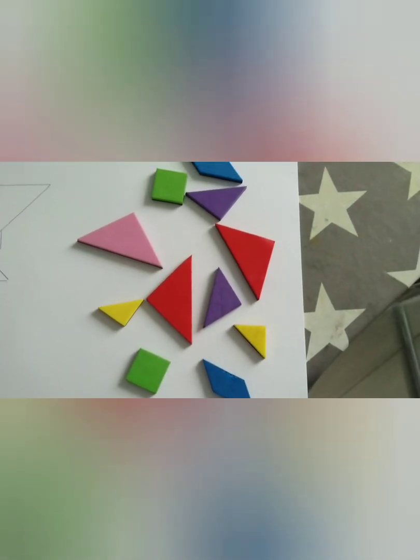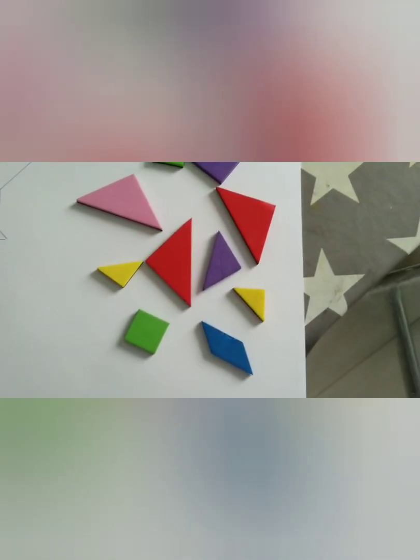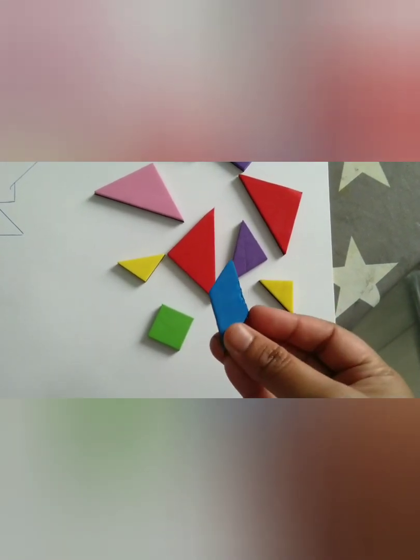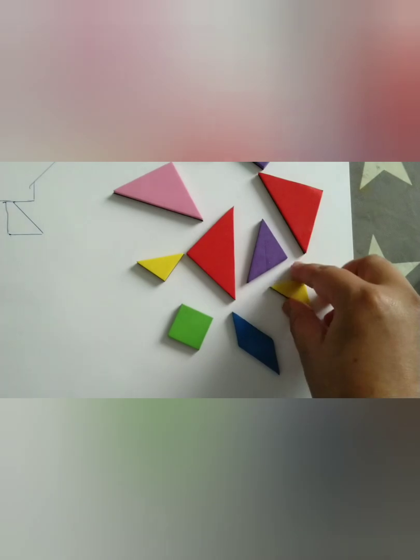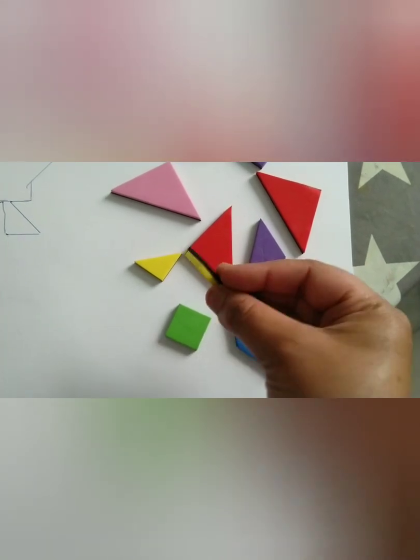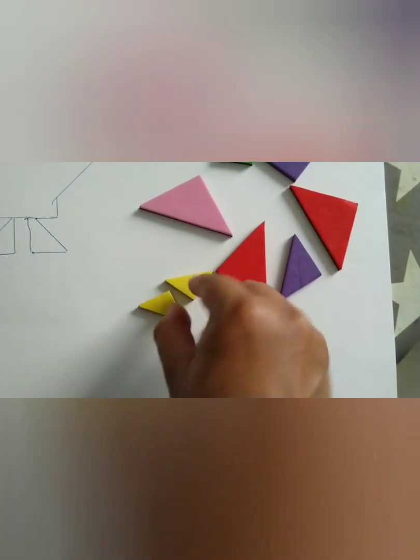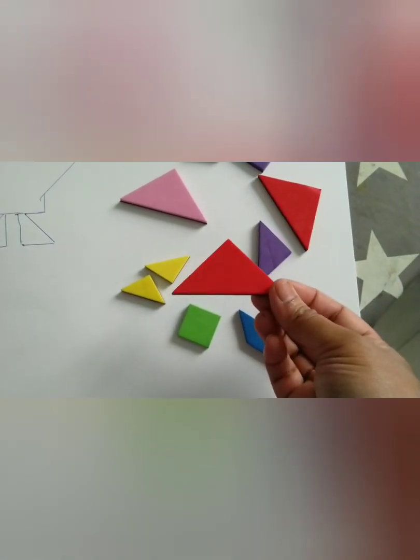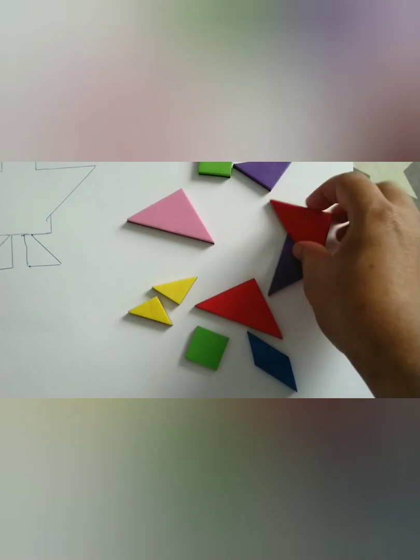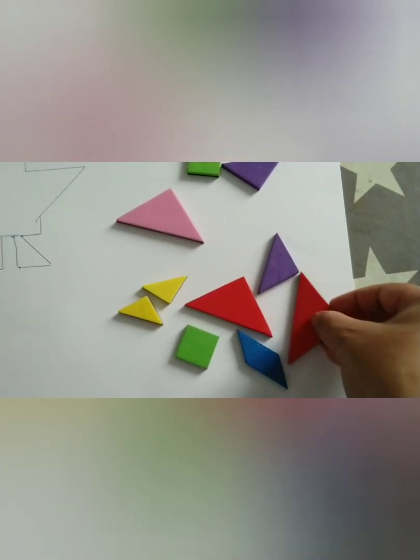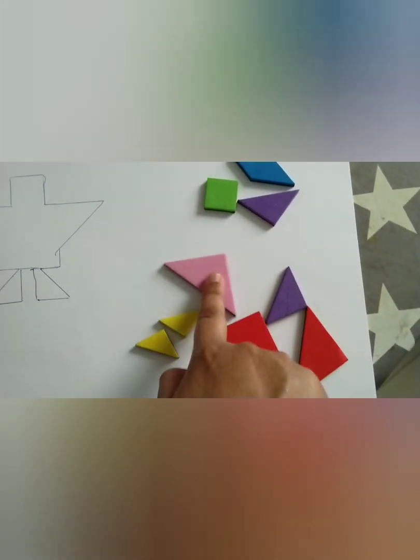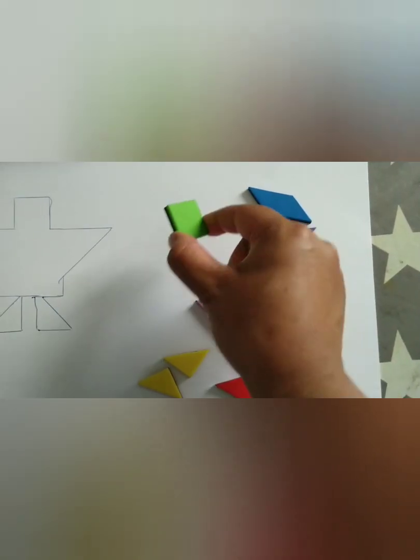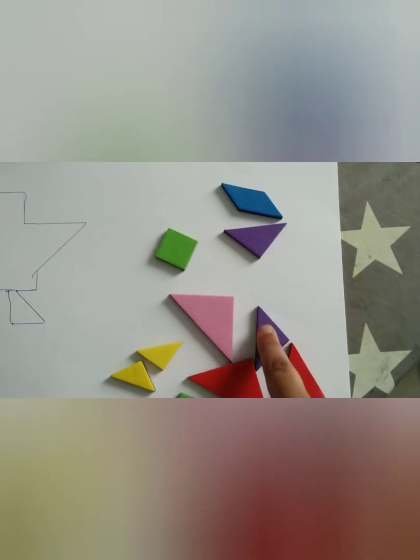So now let's see one by one. This is a parallelogram, this is a small yellow triangle, then we have a big triangle, and similar to the red big triangle we have a pink big triangle, a green color square, and medium shaped triangles.